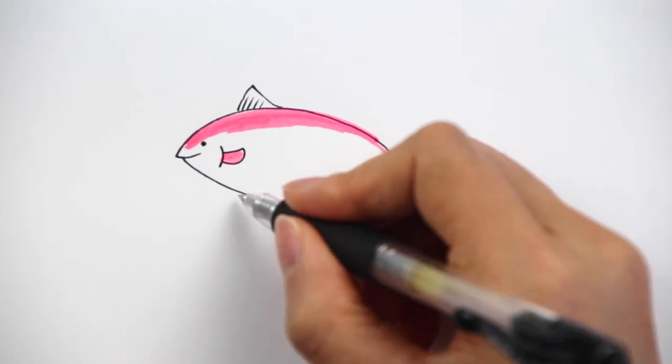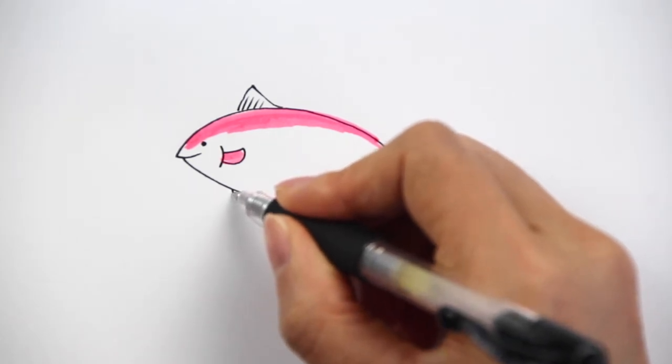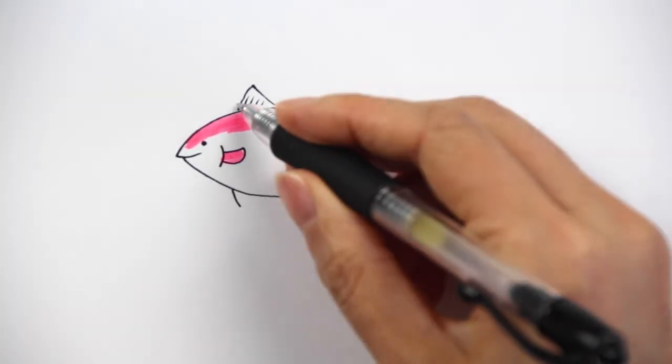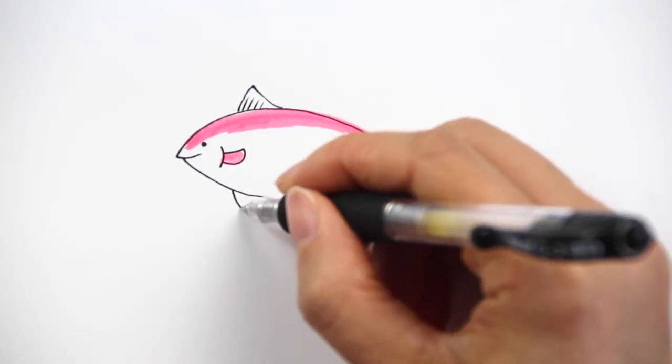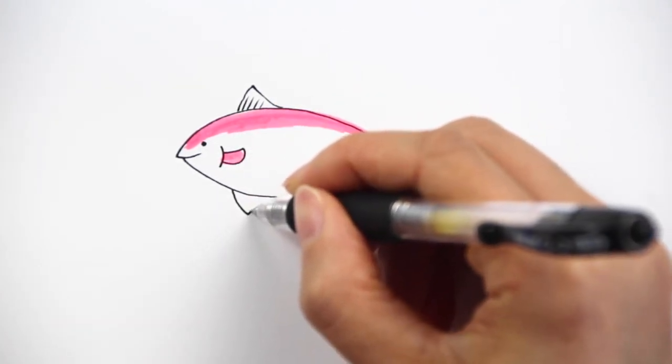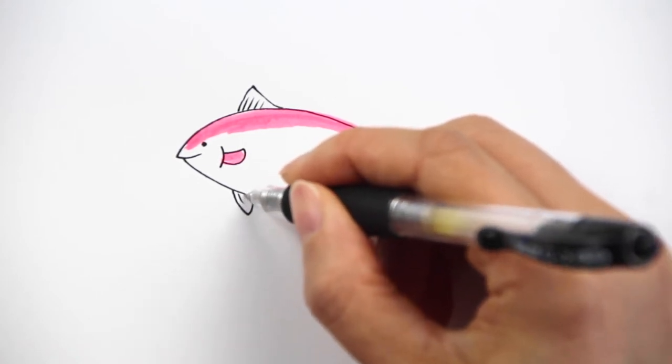And on the very bottom we're going to draw another one, almost on the same line with this main fin. Add a little pointy shape like this and we can add two lines inside as well.